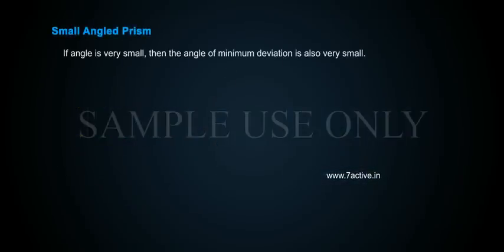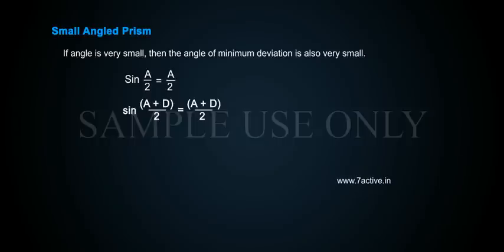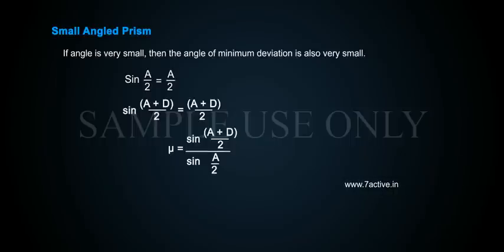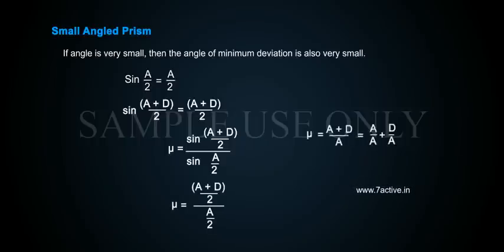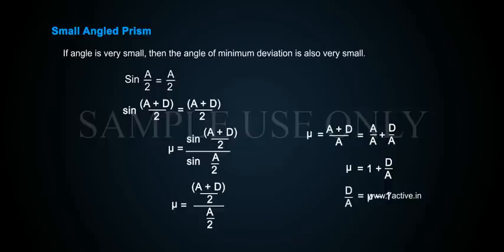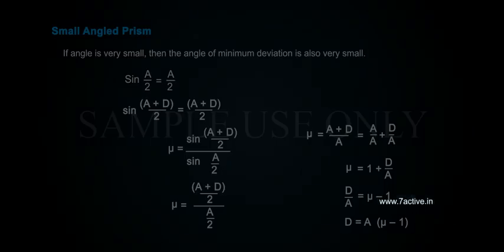Small angle prism: If the angle A is very small, then the angle of minimum deviation D is also very small. Using the approximation: sin(A/2) ≈ A/2 and sin((A+D)/2) ≈ (A+D)/2. Therefore μ = (A + D) / 2 ÷ A / 2 = (A + D) / A = 1 + D/A. So D/A = μ − 1, giving D = A(μ − 1).